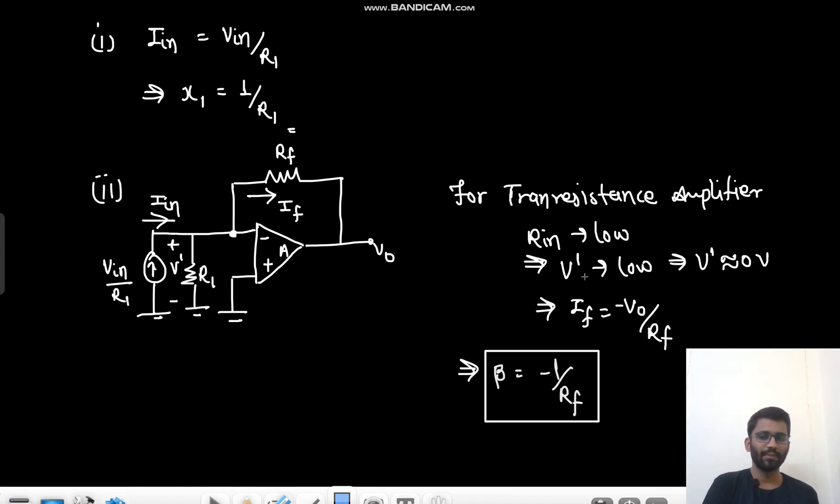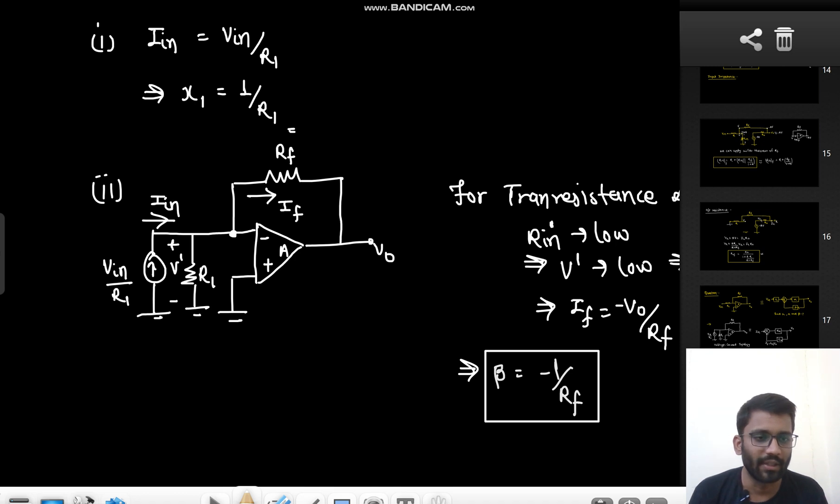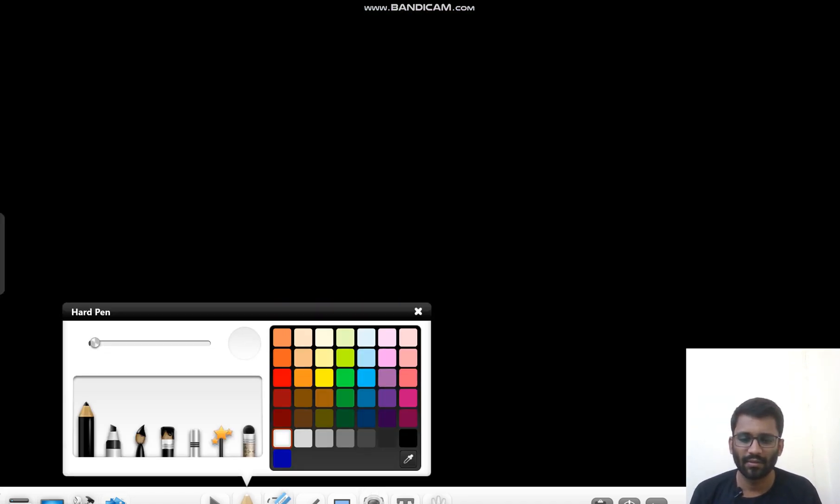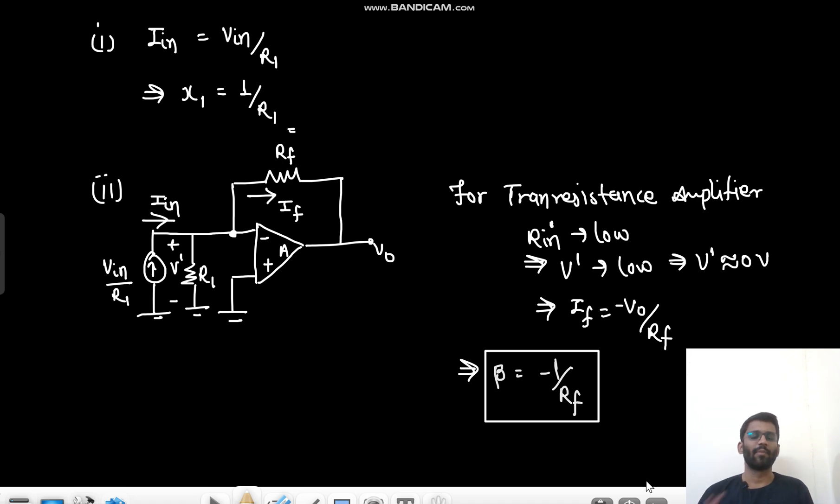Do you get it? The assumption we made that R in is very low. This is not the input resistance of op-amp. R in is not the input resistance of op-amp. I should write, or I should better write it R in dash. R in dash is low. So V dash is low. So we made this assumption. We made this zero. No, no one will say that there is open virtual short. That's why it is zero. No. R in dash is low. V node dash is low. V dash is low. That's why V dash equals zero. So I feedback is minus V node by RF. So feedback factor is minus one by RF. This is the beta we have.